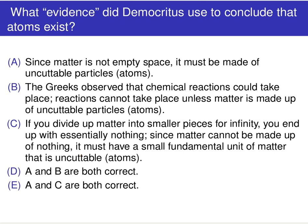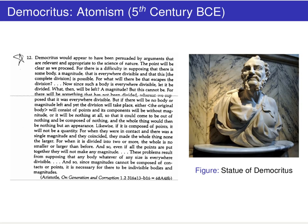Or is it (C) if you divide matter into smaller pieces forever and ever to infinity, you end up with essentially nothing — and since matter cannot be made of nothing, it must have small fundamental units called atoms. Or is it A and B, or C and E? Go ahead and pause the video, do that reading, think about those questions and come up with your response.